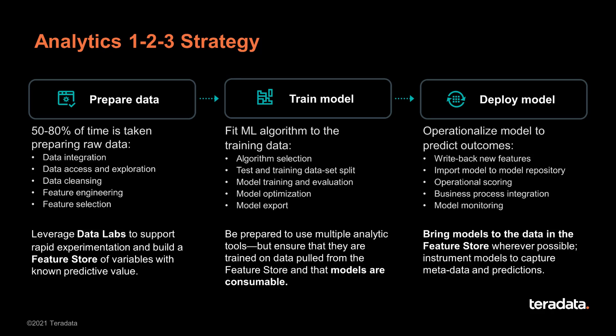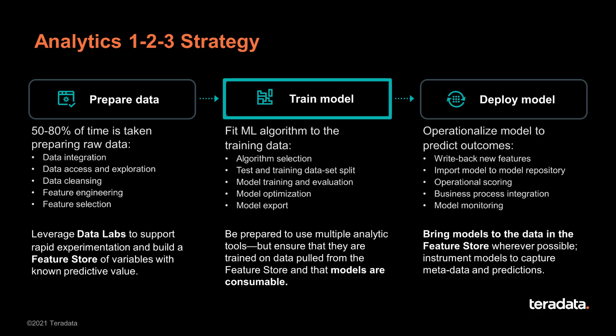Analytics 1.2.3 establishes a straightforward roadmap that ensures machine learning and AI projects live up to their promise and deliver real business value. Analytics 1.2.3 decouples the different elements of the analytics process into three stages. Stage 1 is efficient data preparation and feature engineering. Stage 2 gives data scientists the flexibility to use their preferred tool to create predictive models, bringing value to the business.